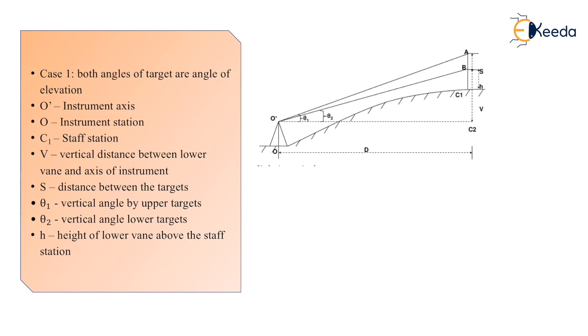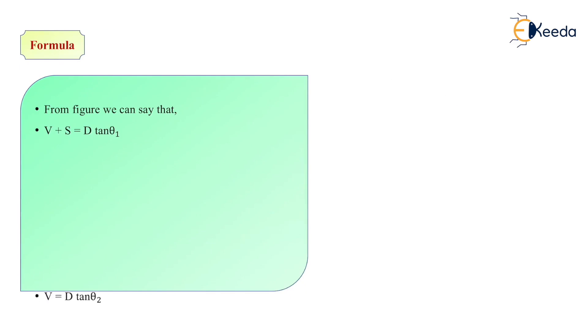All the notations are given as follows. As we have discussed, O is your instrument axis. O is instrument station. V, as we know, is a vertical distance between the lower target and the axis of instrument. And S is distance between two targets. Then we have theta 1 as vertical angle for lower target. The vertical distance V plus S is equal to D tan theta 1. By simplifying this, we can find the formula for D, that is S divided by tan theta 1 minus tan theta 2.